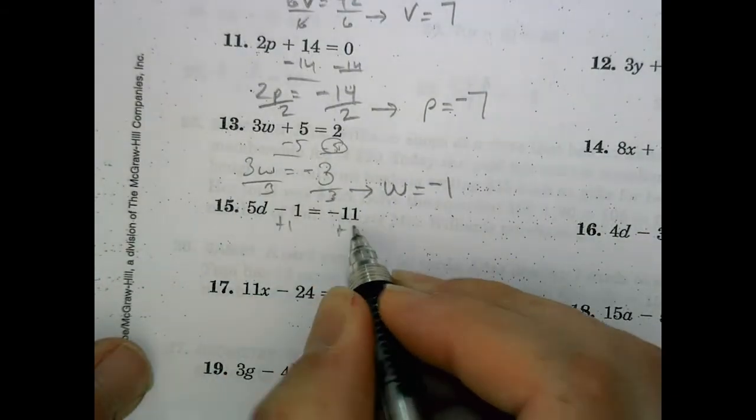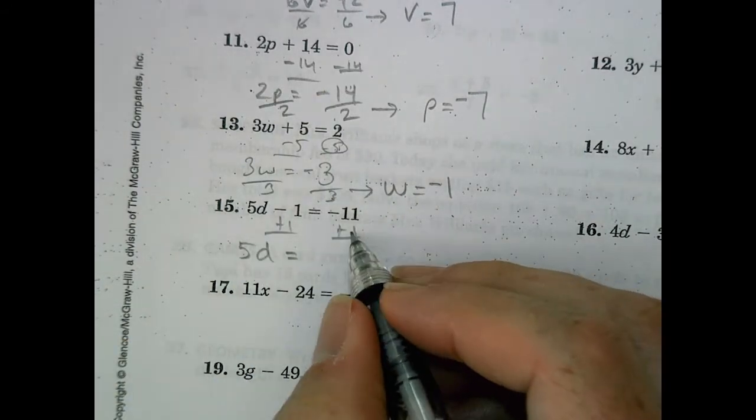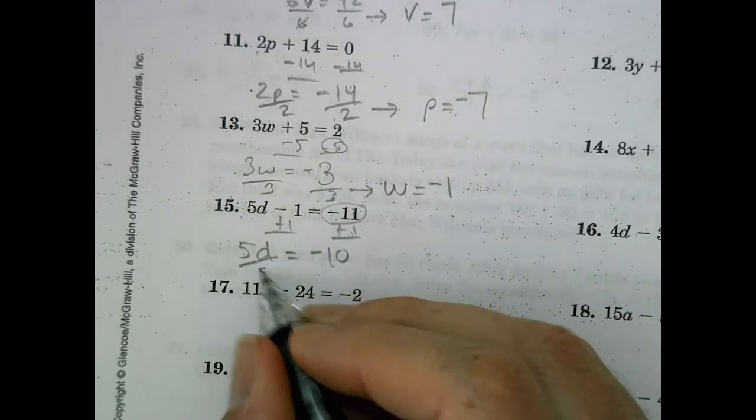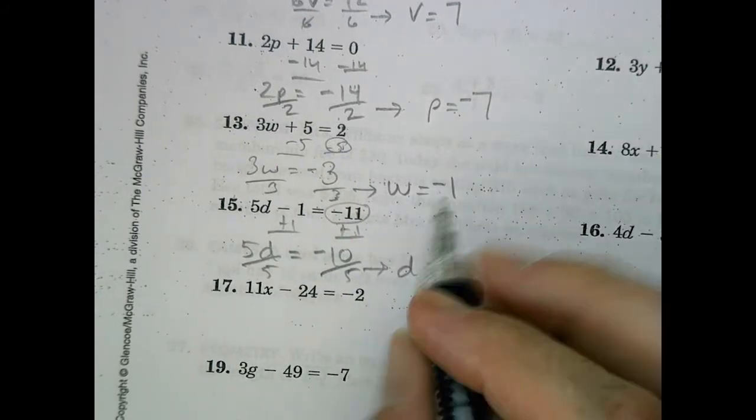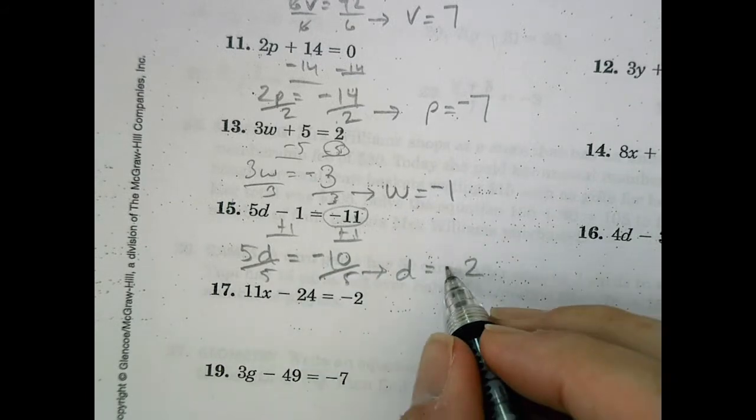Number 15. We're going to add 1, add 1. So 5d on this side. Here I have signs are different. Find the difference and keep the greater absolute value, which is negative. Now we'll divide by 5 so that we have d equals 10 divided by 5 is 2, and negative divided by positive is negative.